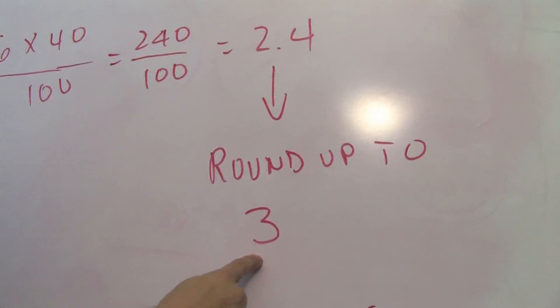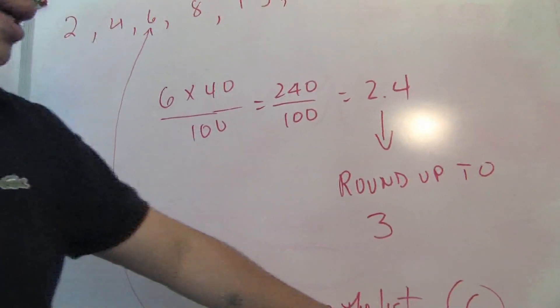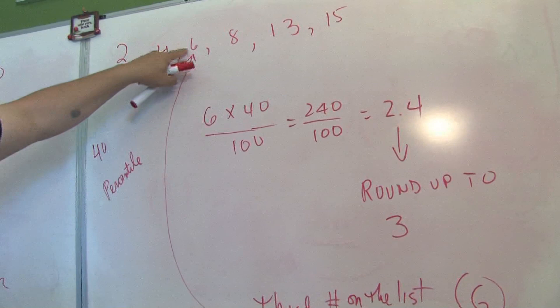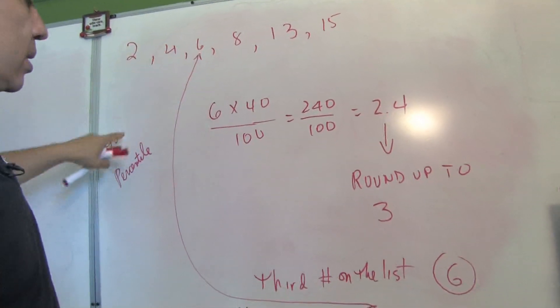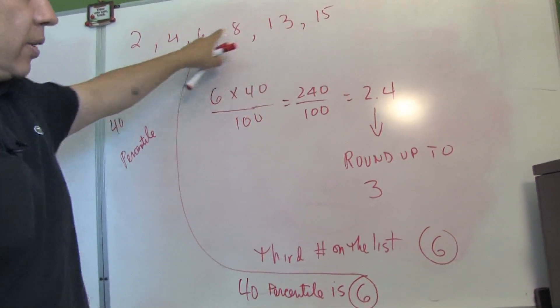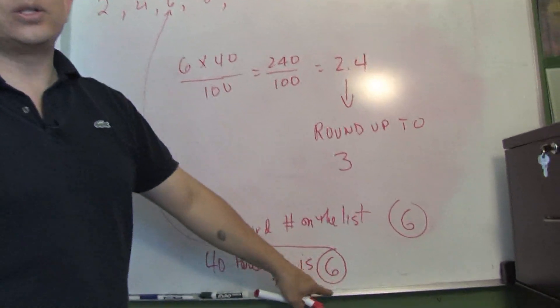So the 40th percentile is the third number on the list. Count: 1, 2, 3. So 6 is the 40th percentile of this list.